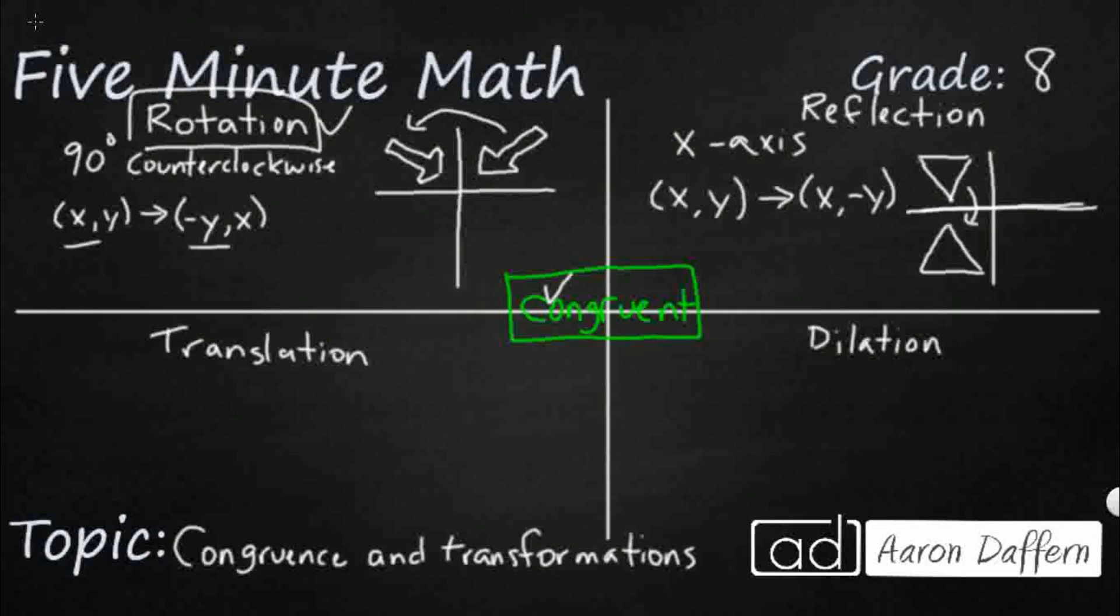But side lengths, angle measures, area, all stays exactly the same. So rotation keeps a shape congruent, so does a reflection.